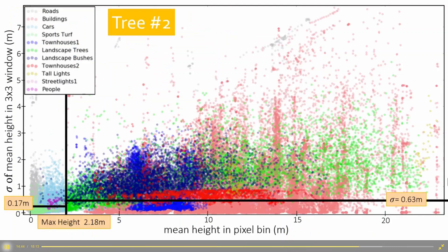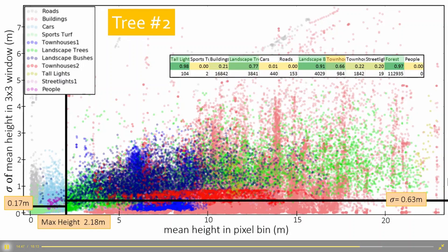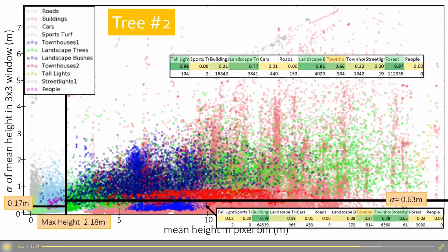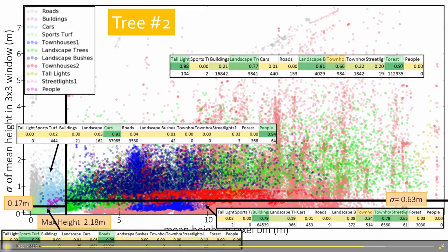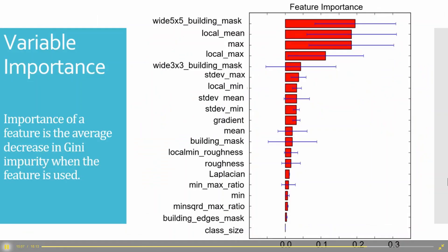Looking at a scatter plot of the thresholds: vegetation and tall lights appear up high, buildings over to one side, sports turf and roads in another area, and cars and people in yet another region. Another very useful output from random forest is feature importance. Each time a split is made on a feature, you can measure how much it helped. This shows which features are really good and which aren't very useful. You can throw in many features, check feature importance, and remove the ones that turned out not to be useful.